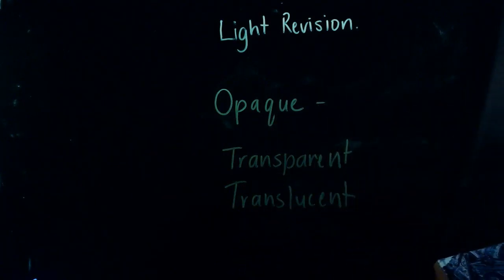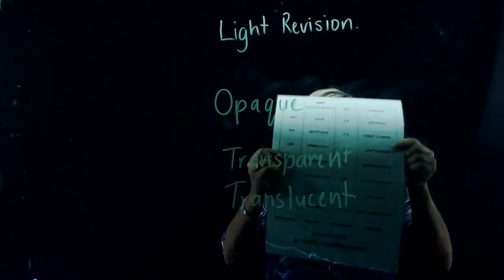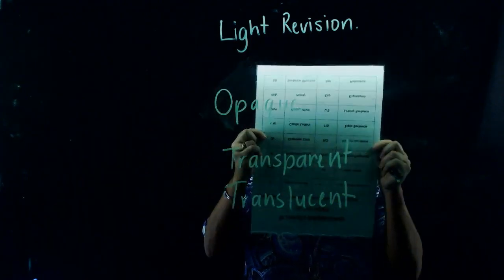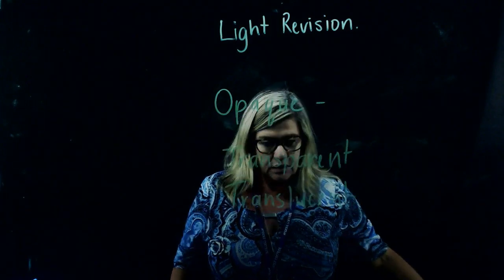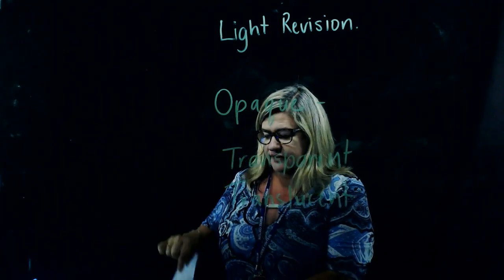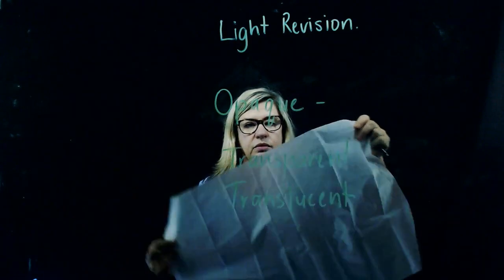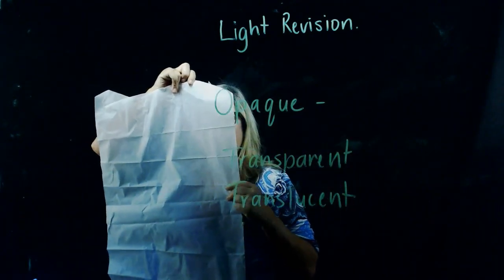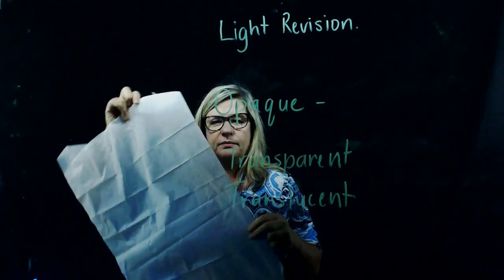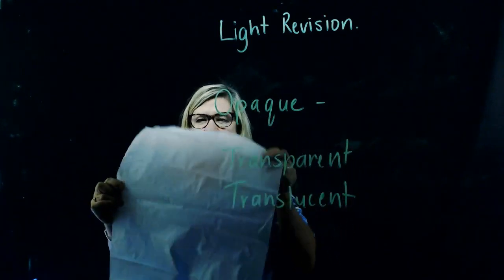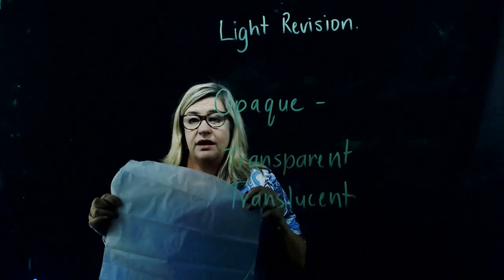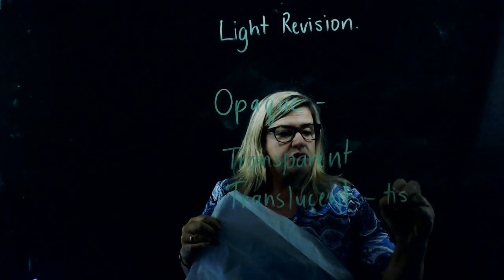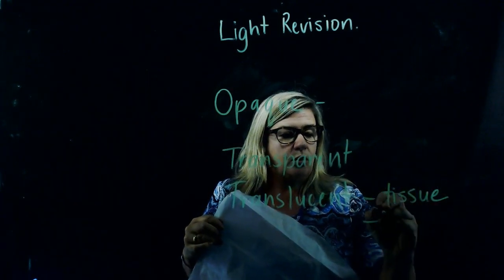Opaque completely blocks the light — so you can't see me behind this because it's opaque. If some light could come through, you might be able to see that there's something behind it, but not all the light passes through. That's translucent. An example of translucency might be tissue or baking paper.